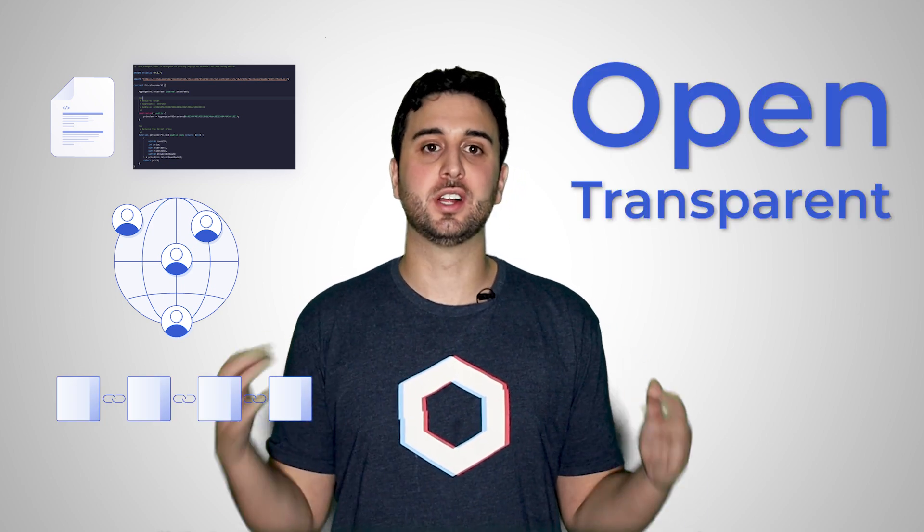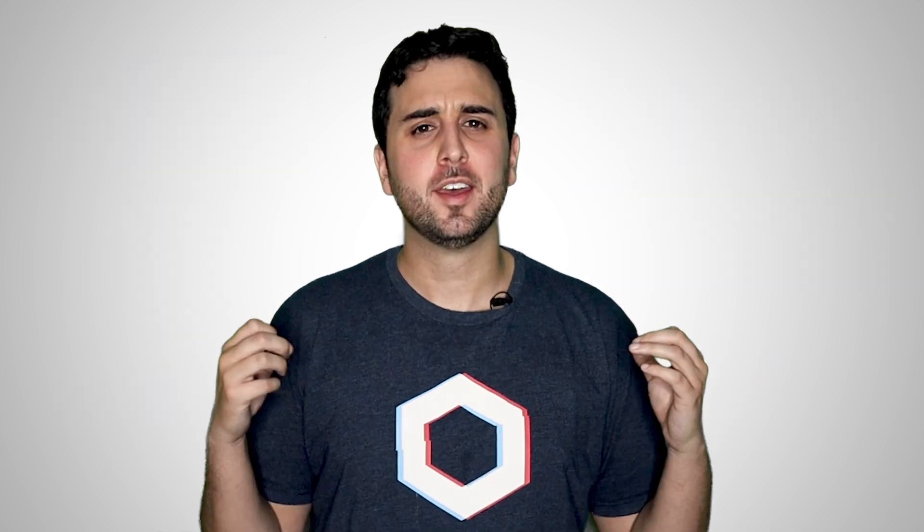Because smart contracts inherit the powerful decentralized properties of blockchains, smart contract applications are more open, transparent, and egalitarian. Businesses can take advantage of smart contracts to offer more efficient and transparent services at lower prices.